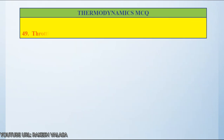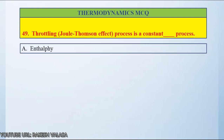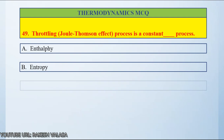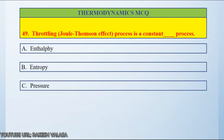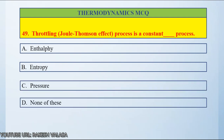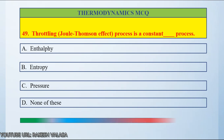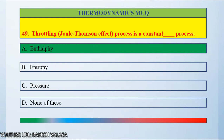Question number 49: Throttling — that means the Joule-Thomson effect process — is a constant dash process. Option A: enthalpy, Option B: entropy, Option C: pressure, Option D: none of these. The answer is enthalpy. Throttling process is a constant enthalpy process.